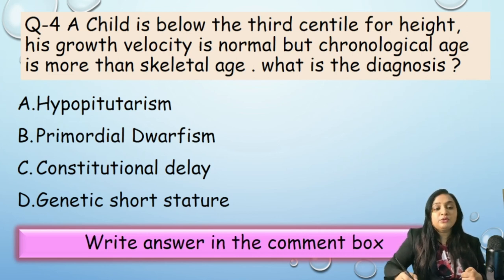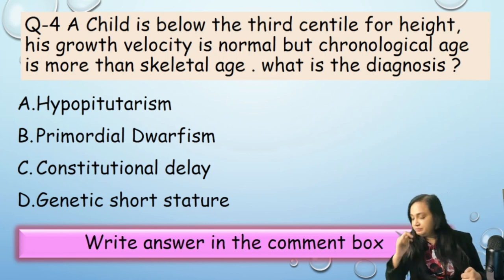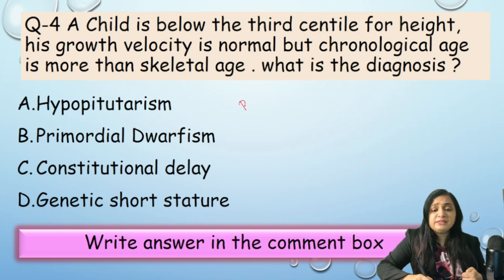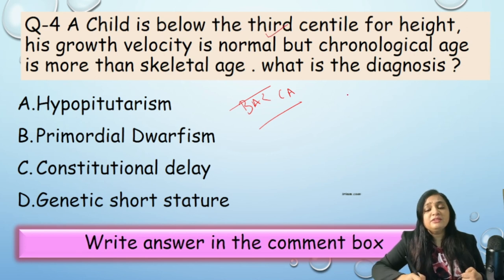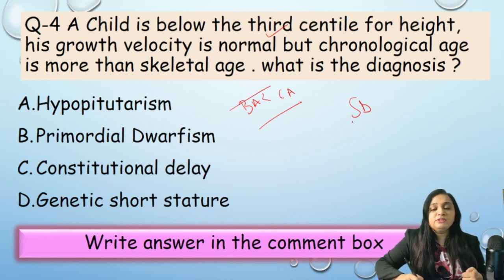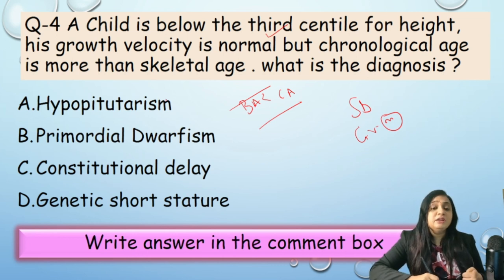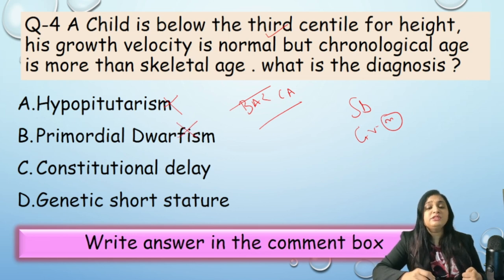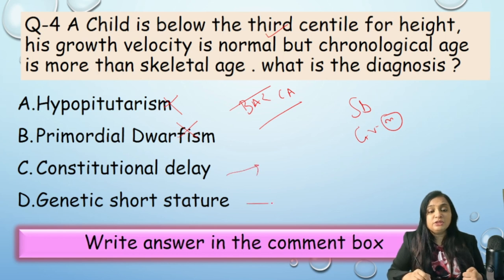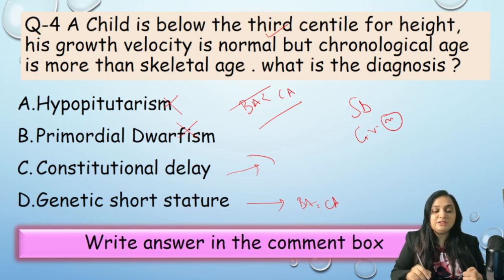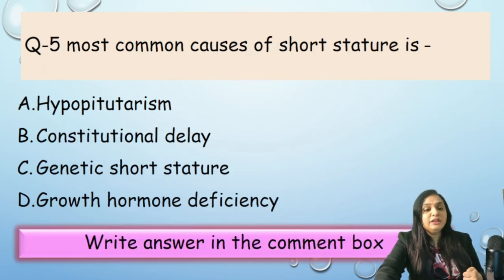Question 4: A child is below the third centile for height; growth velocity is normal but chronological age is more than the skeletal age (i.e., bone age is delayed). Options: A) Hypopituitarism; B) Primordial dwarfism; C) Constitutional delay; D) Genetic short stature. Hypopituitarism and primordial dwarfism are excluded because they would affect the US/LS ratio or growth velocity. Genetic short stature is excluded because bone age should equal chronological age in that condition. Correct answer: constitutional delay.